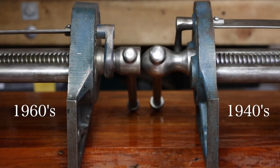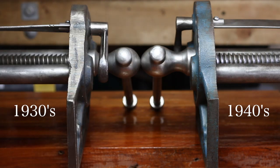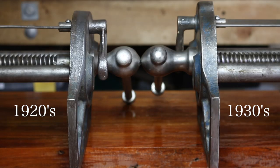Considering the side edge of the faceplates, it is evident that the 1960s version is wider. The 1940s version is slightly wider than the 1930s, and the 1930s is about the same thickness as the 1920s version.